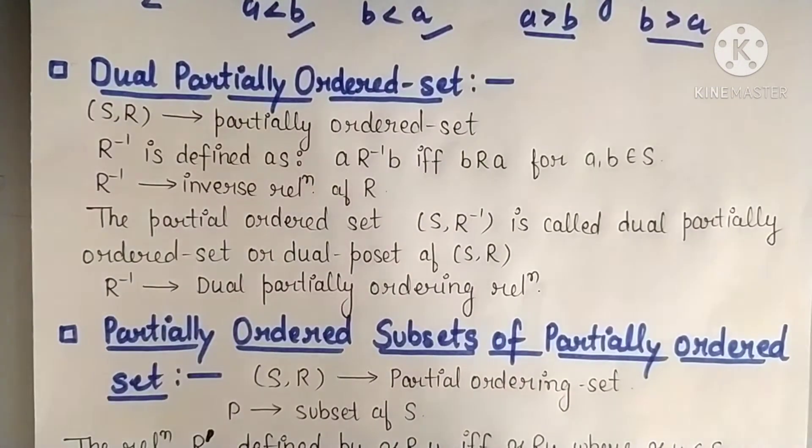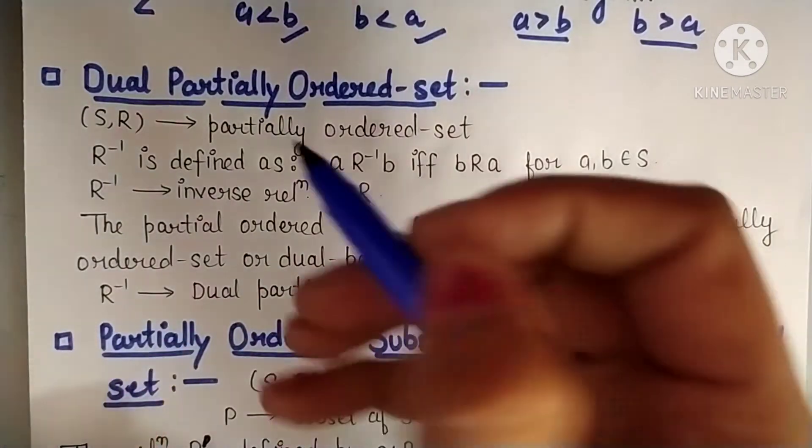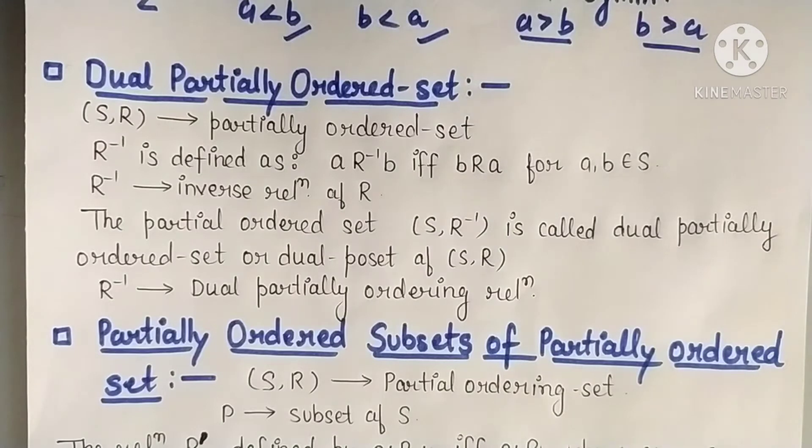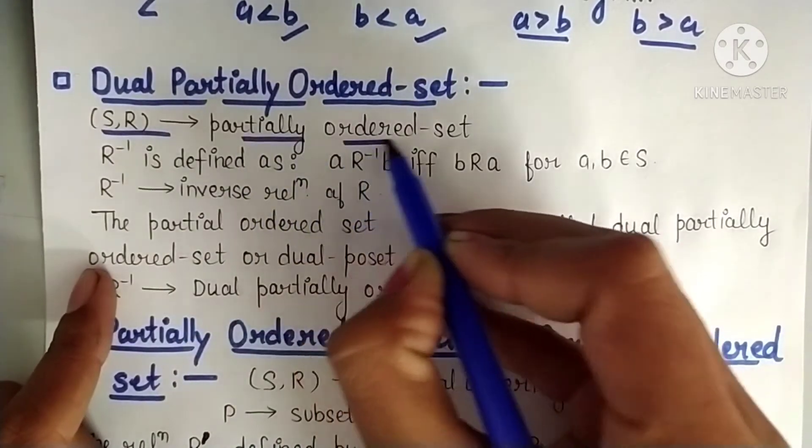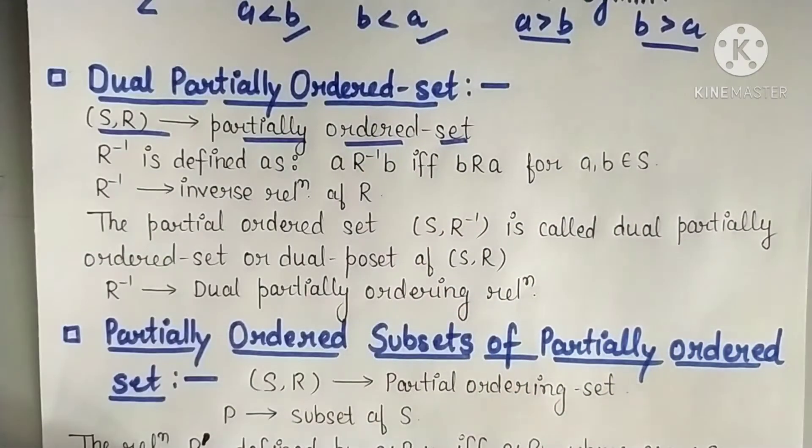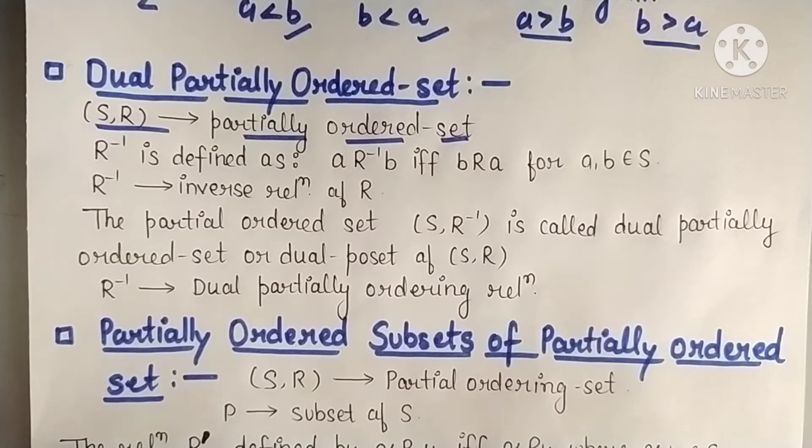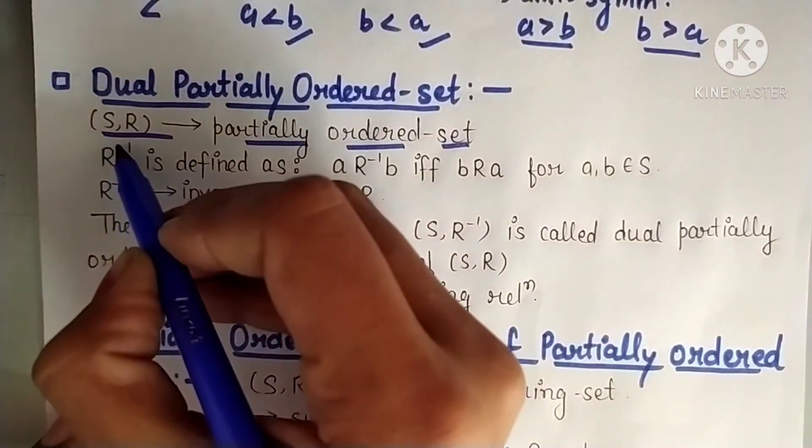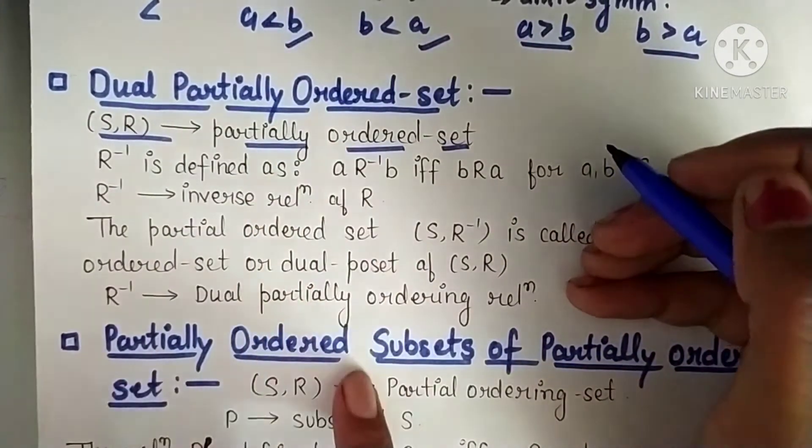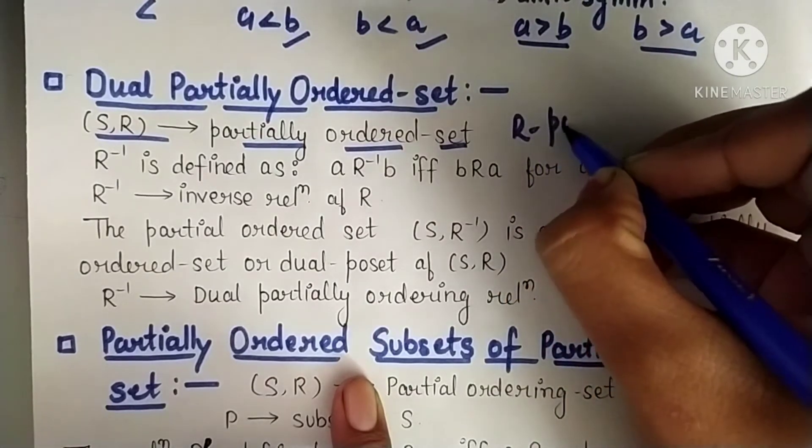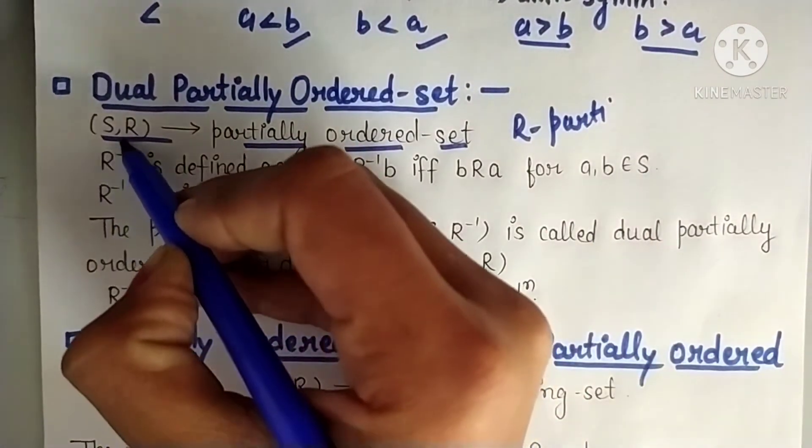Next is dual partial ordering ordered set, now dual partially ordered set. What extra things do we have in dual? First we took that (S,R) is also a partial ordered set. What was partial ordered set? If we have a partial ordering relation, and we apply that relation on a set, then we collectively call them partial ordered set. So R inverse - if I say (S,R) is a partially ordered set, this means R is a partial ordering relation.